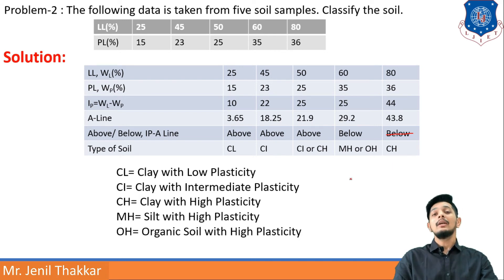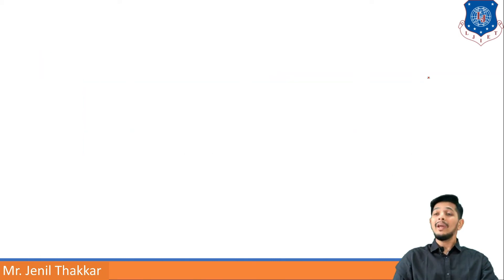And WL is 80 and it is going above, so I have to go with CH—clay with high plasticity. CL is clay with low plasticity, CI is clay with intermediate plasticity, CH clay with high plasticity, MH silt with high plasticity, OH is organic soil with high plasticity.